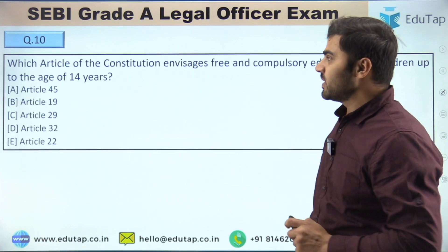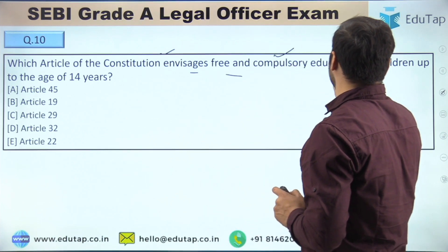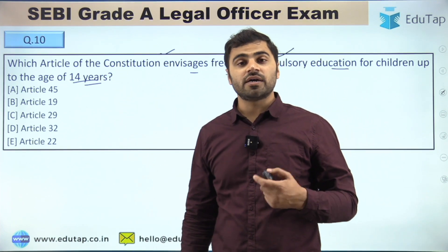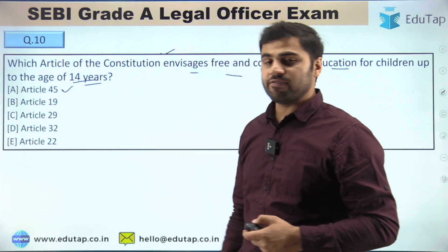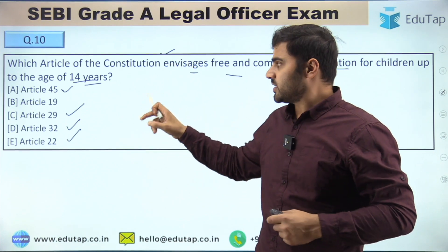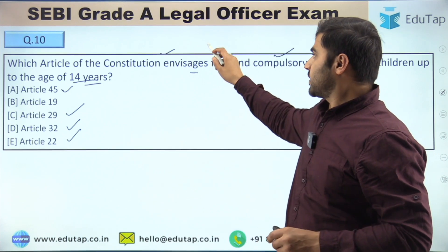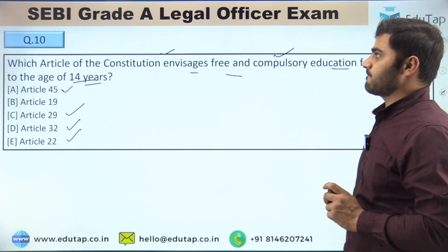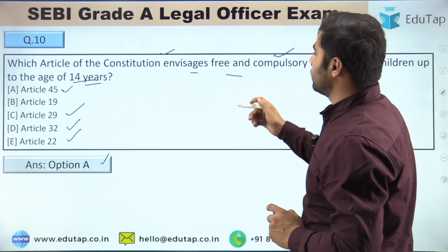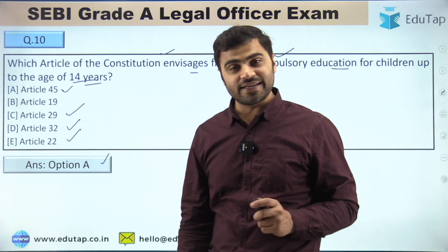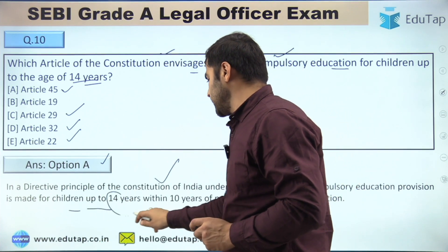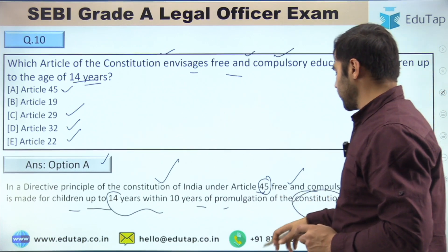The last question: Which article of the constitution envisages free and compulsory education for children up to the age of 14 years? Options are: Article 45, Article 19, Article 29, Article 32, or Article 22. Note — this question is from the Directive Principles of State Policy. The right answer is option A — Article 45. Article 45 envisages free and compulsory education for children up to the age of 14 years, within 10 years of promulgation of the constitution, under the directive principles.